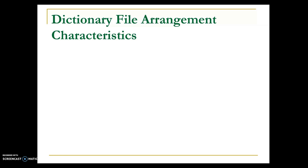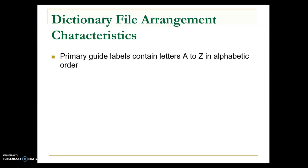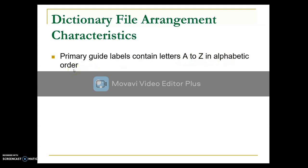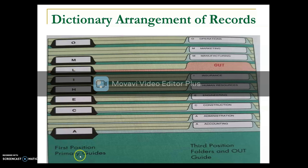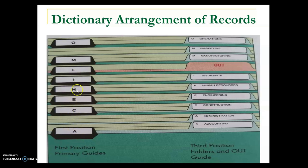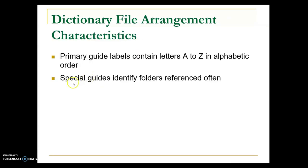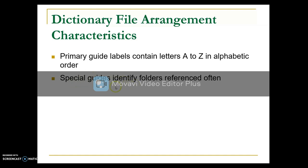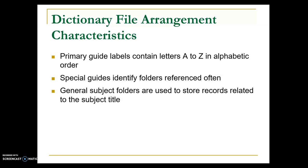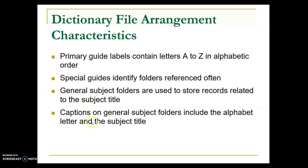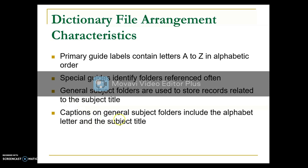The characteristic of the dictionary file arrangement is that the primary guide labels contain the letters A to Z of the alphabet. As you can see, the first position for the primary guide contains only the alphabet letter in sequence from A to Z. The special guide identifies the folders that are most frequently used. The general subject folder stores records related to that particular subject title, so the captions on general subject folders include the alphabet letter and also the subject title.